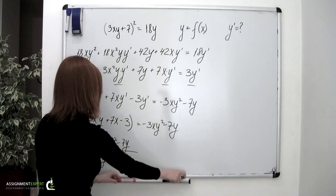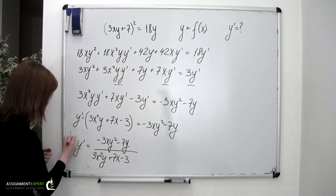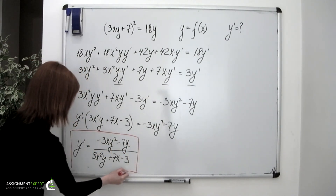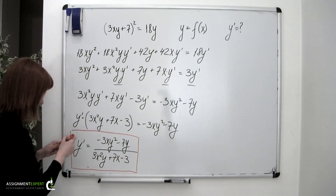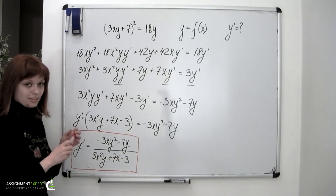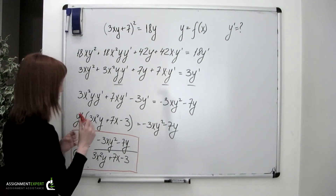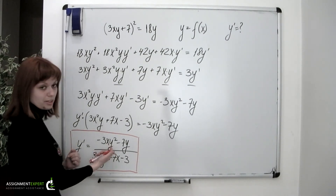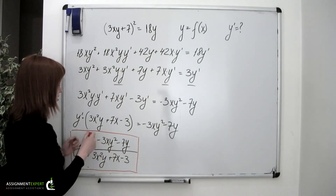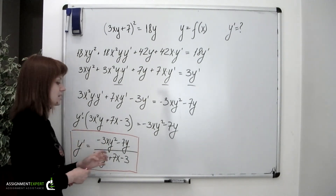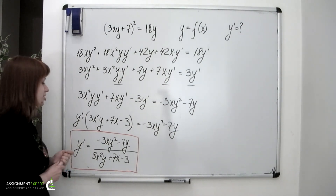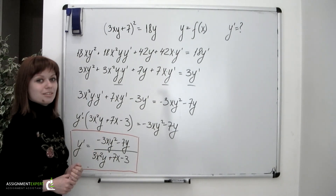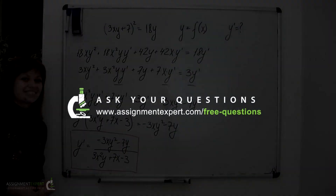And this is our final answer. Note that it contains both x and y variables, which may seem a little unusual, but this is exactly how it should be when we are dealing with a function given implicitly.